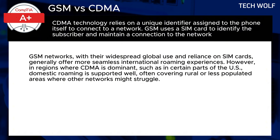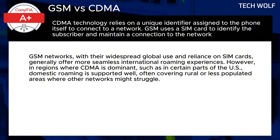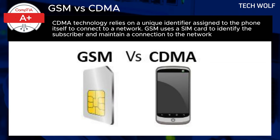GSM networks, with their widespread global use and reliance on SIM cards, generally offer more seamless international roaming experiences. However, in regions where CDMA is dominant, such as in certain parts of the US, domestic roaming is supported well, often covering rural or less populated areas where other networks might struggle.